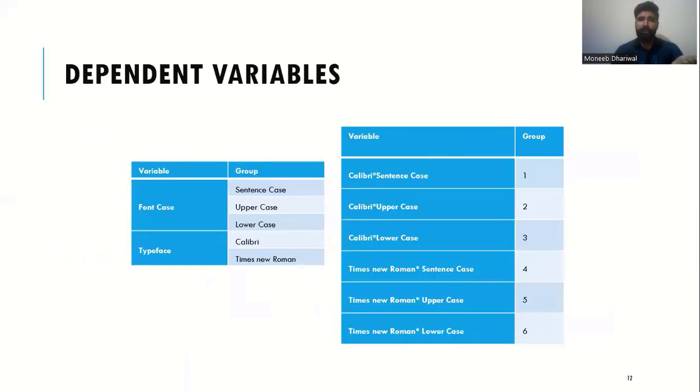There were three independent variables of this study. The font case has three subcategories: sentence case, upper case, and lower case. We have selected two typefaces, one from the serif family, that was the Times New Roman, and one from the sans-serif family, that was the Calibri.